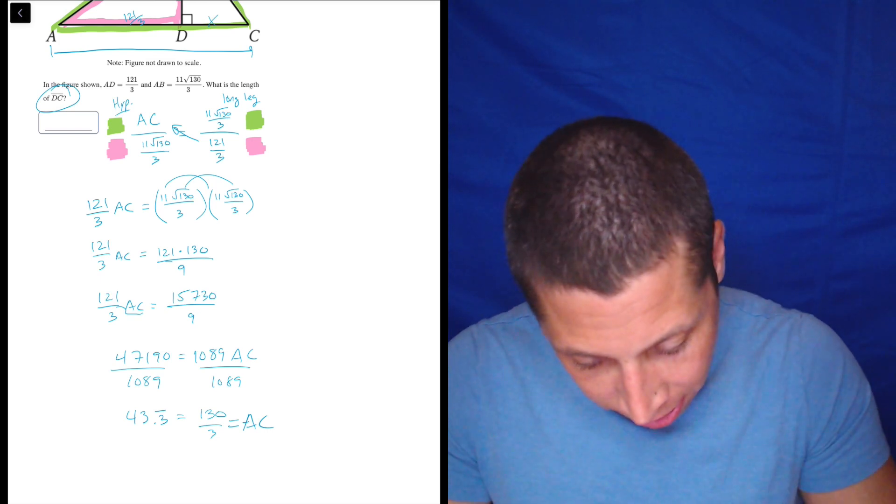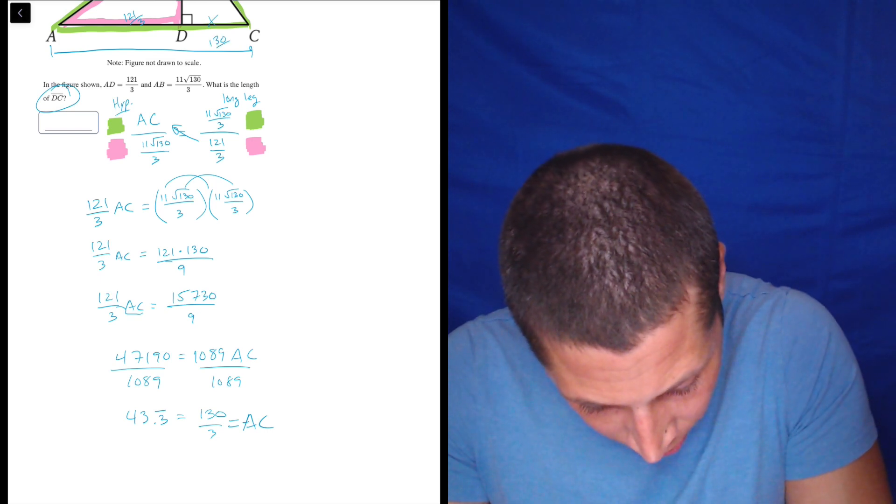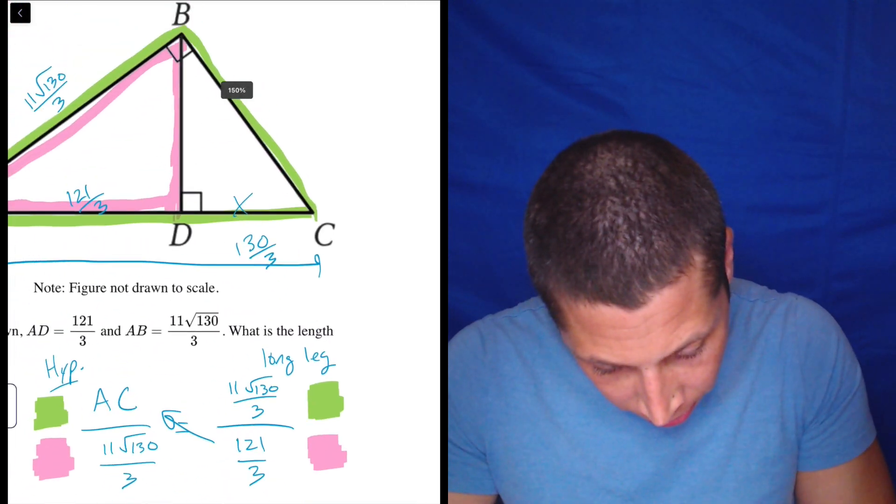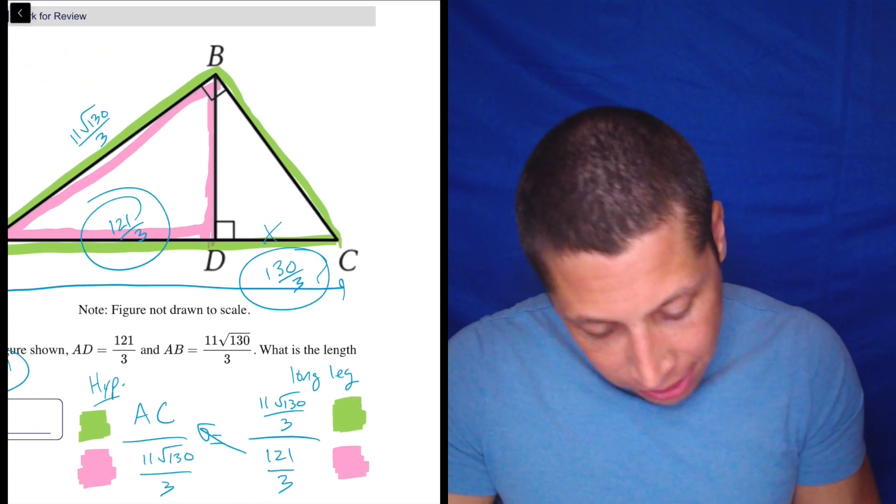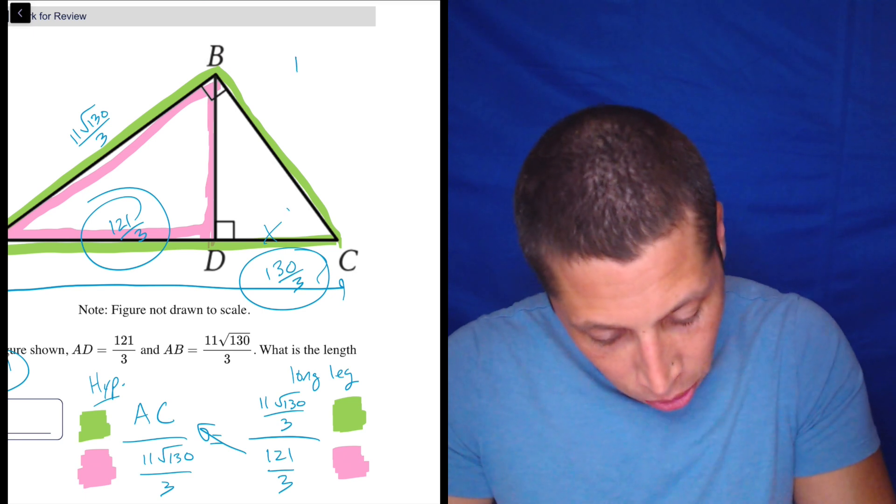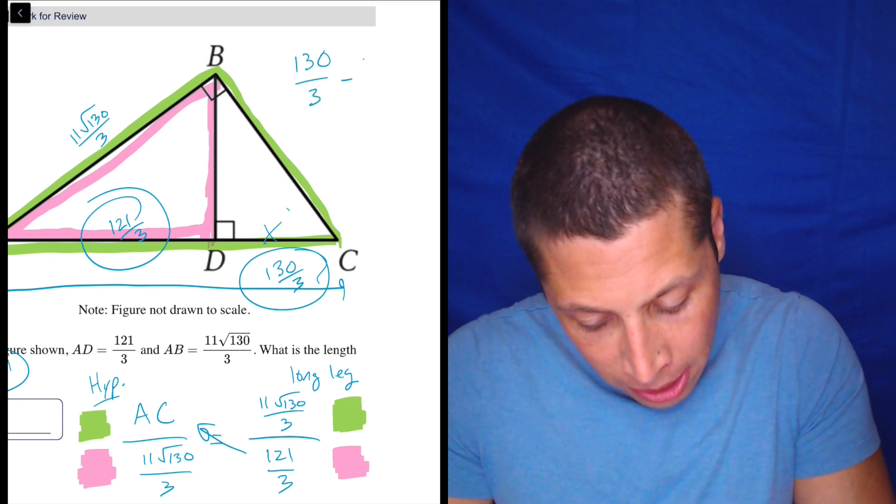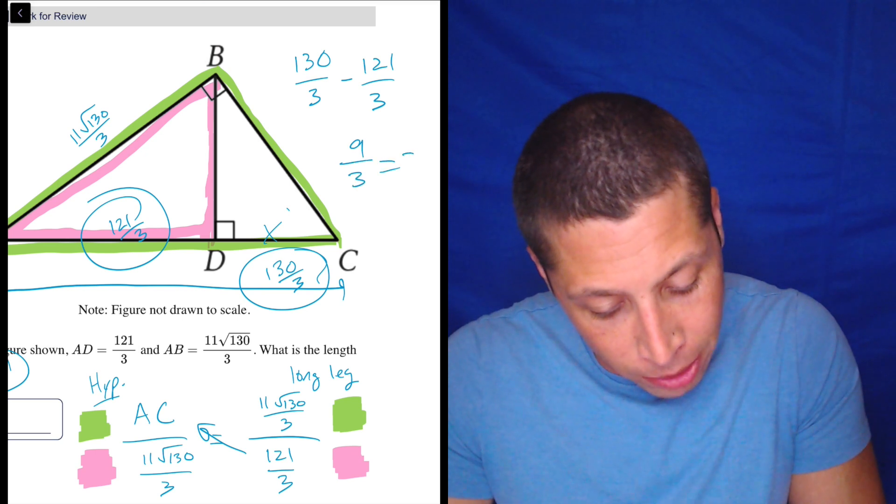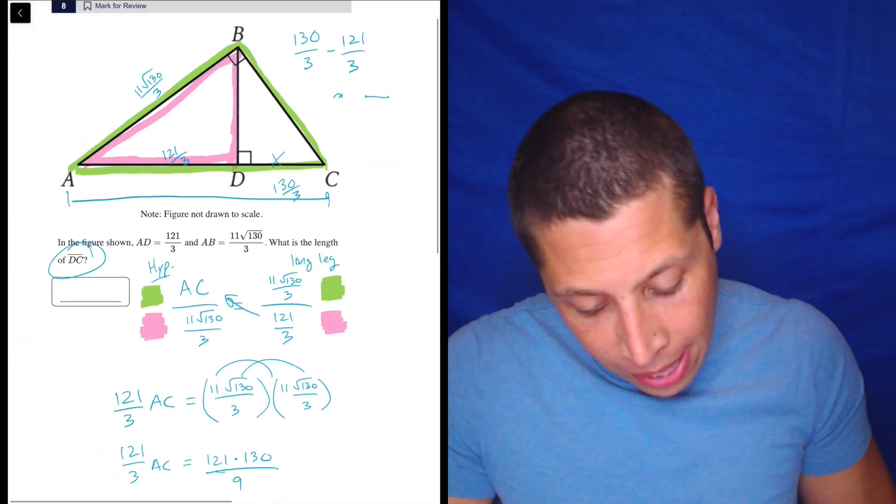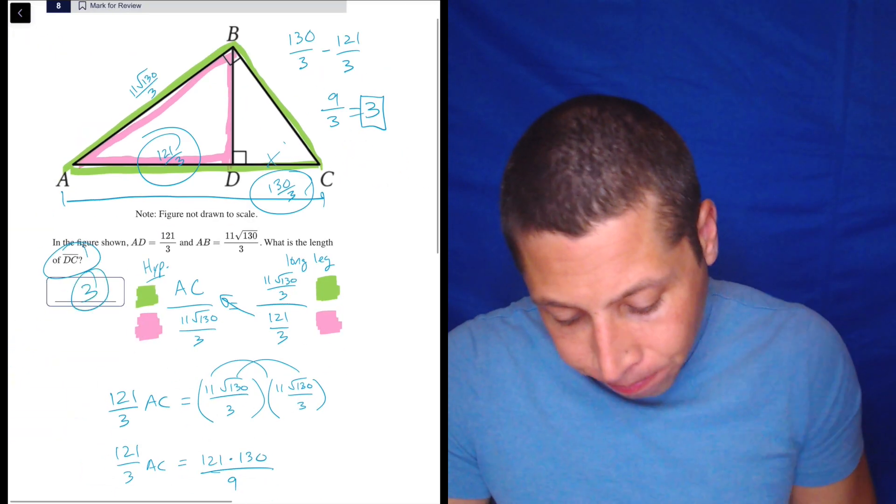So the last step here is if this whole thing is 130 over three, let's go back. What do we do? We have to subtract this from this to get X. So 130 over three minus 121 over three. Well, that's really easy. That's nine over three, which is three. And that is that. That's the answer. Done.